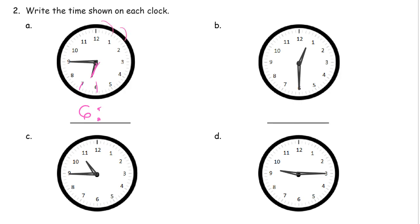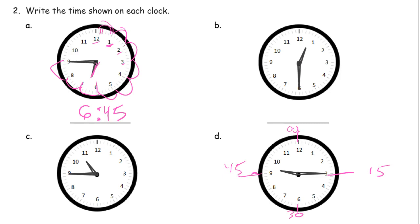And we're looking at five, ten — each big number tells you the minutes on the clock, and each little mark is one minute. So every big number you count for minutes: five, ten, fifteen, twenty, twenty-five, thirty, thirty-five, forty, forty-five — so it's six forty-five. You'll get to know these quarter marks really well. Straight up is double zero for time. When the minute hand's on the three, you're looking at fifteen minutes. When it's down on the six, it's thirty. When it's over on the nine, it's forty-five minutes.